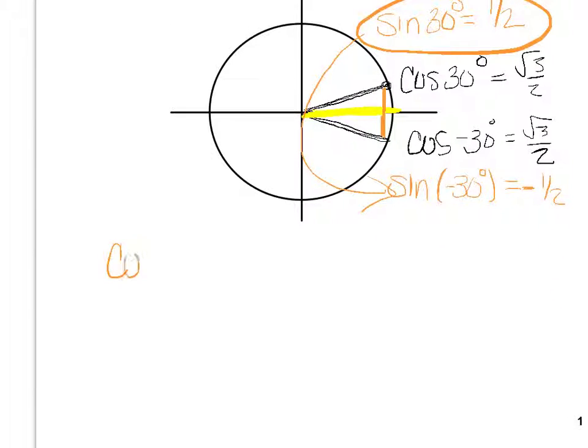If I know that the cosine of 240 degrees is negative root 3 over 2, then I know the cosine of negative 240 degrees is still negative root 3 over 2.